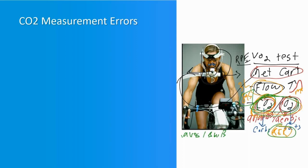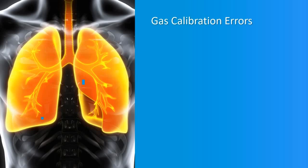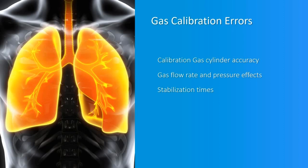The carbon dioxide analyzer accuracy is a significant source of VCO2 error, and like the oxygen analyzer, the CO2 analyzer is also subject to interferent gas errors. Calibration gas cylinder accuracy is an important issue; it is best to use a primary laboratory standard accurate to 0.02% absolute. All gas analyzers are sensitive to changes in the pressure of the gas — this must be either controlled or minimized by calibrating under the same conditions as sampling. Insufficient gas analyzer stabilization times during calibration produce erroneous readings; you need to wait for the gas analyzers to stabilize completely.